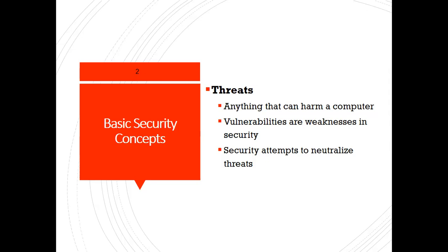Network vulnerabilities include possible intrusion by an outside party, for example insecure Wi-Fi access points and poorly configured firewalls. Another vulnerability is operating system vulnerability — these are vulnerabilities within particular operating systems that hackers may exploit to gain access to the OS or cause damage, for example default super user accounts and hidden backdoor programs.